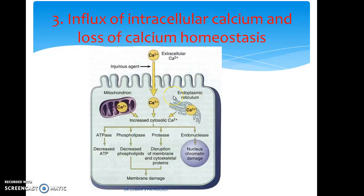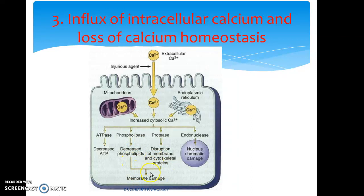The next mechanism is influx of intracellular calcium and loss of calcium homeostasis. The concentration of calcium increases intracellularly in cellular injury. That results in activation of ATPase, resulting in decreased ATP; phospholipase, causing decreased phospholipids; proteases, resulting in disruption of membrane and cytoskeletal proteins — these two lead to membrane damage; and endonucleases, causing nuclear chromatin damage.